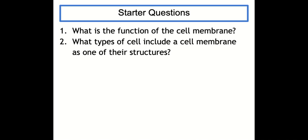Both of these we covered in lesson one. The function of the cell membrane — it controls entry and exit of substances or molecules into and out of the cell. The types of cell that include a cell membrane is all four types that we went over in cell structure: animal, plant, bacterial and fungal cells.